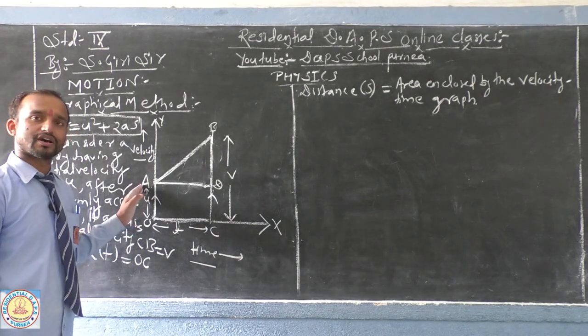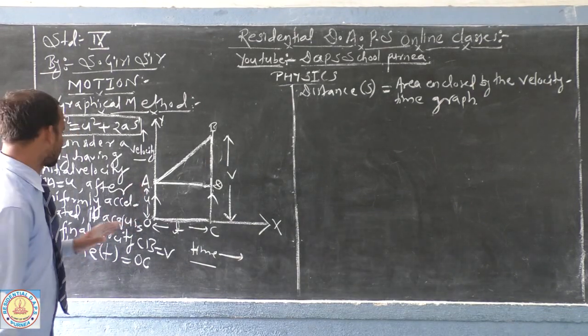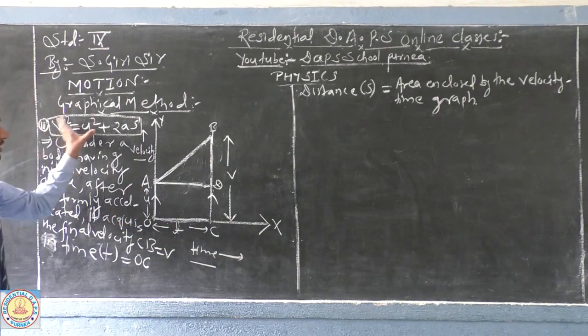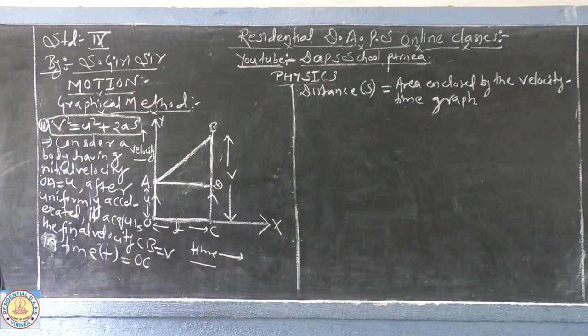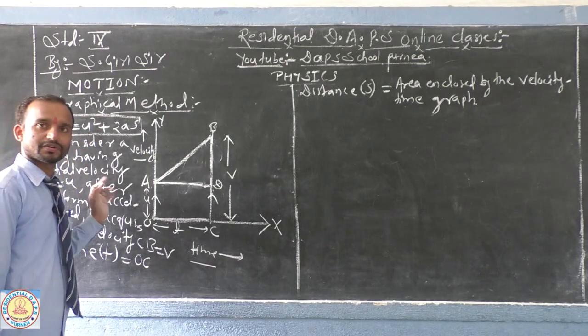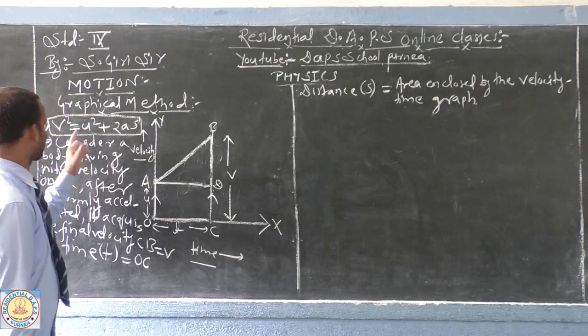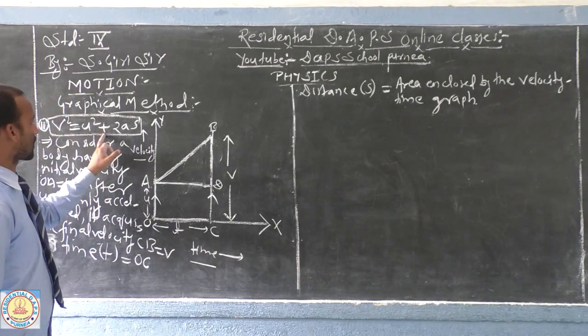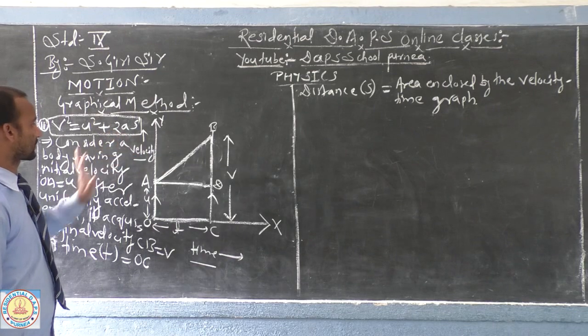It is now time to derive the third equation by graphical method, which is v² = u² + 2as.